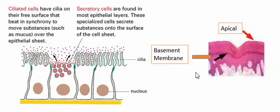The epithelial cells lie on the reticular lamina, and the reticular lamina is bound to another connective tissue called areolar connective tissue. Remember that connective tissue is innervated but does not have blood vessels. Now let's move on and talk about some different types of epithelium.